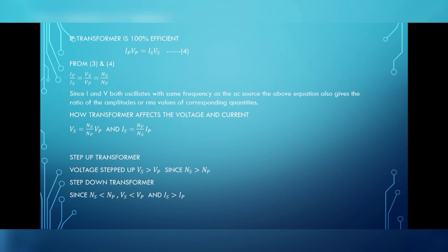VS equals NS by NP into VP and IS equals NP by NS into IP. For example, if a primary coil of a transformer has 100 turns and the secondary has 200 turns, NS by NP is equal to 2 and NP by NS is equal to 1 by 2. Thus, a 220 volt input at 10 amperes will step up to 440 volt output at 5 amperes.